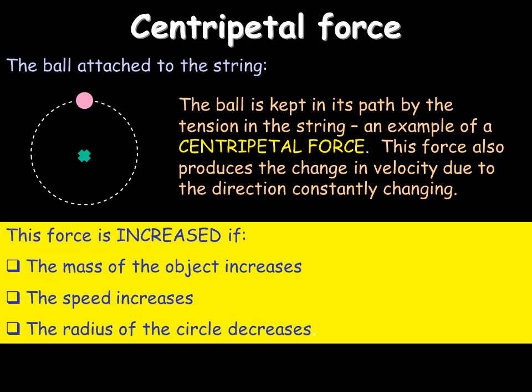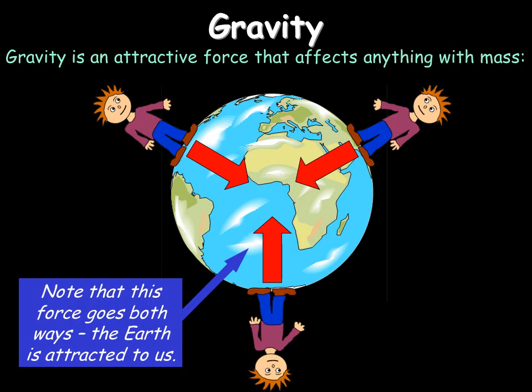Going back to the ball on a string — imagine it going round in a circle. The centripetal force keeps it in circular motion, keeps it at a constant speed but changes its direction continually. The force has to be increased if the mass of the object increases, if the speed increases, or if the radius of the circle decreases — a smaller circle. All of these would mean that you'd have to pull harder on the string.